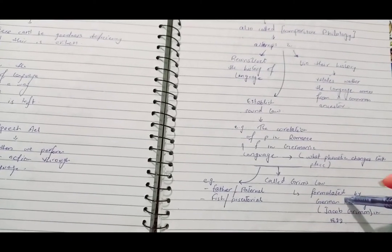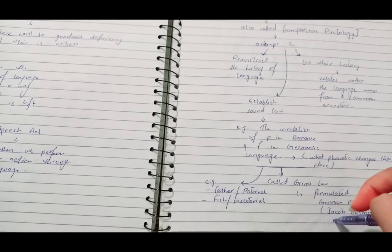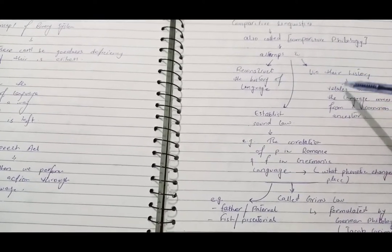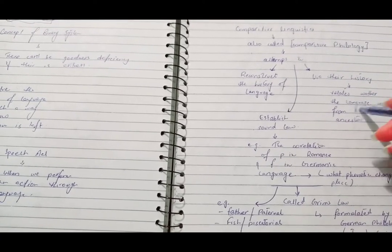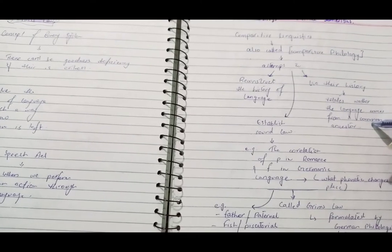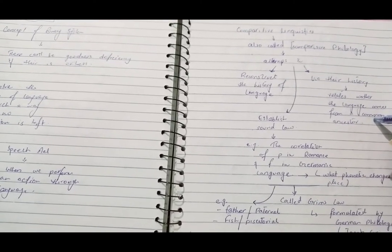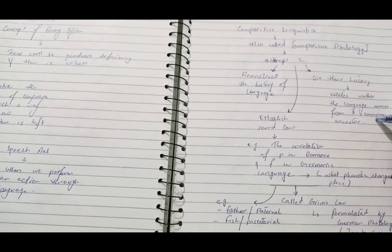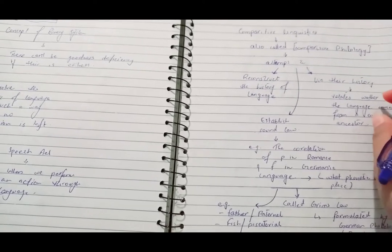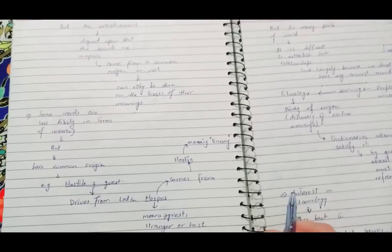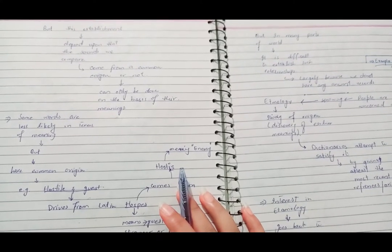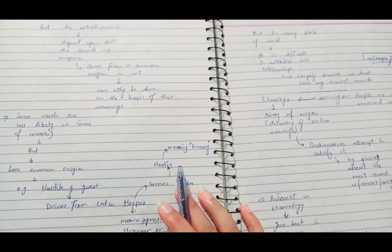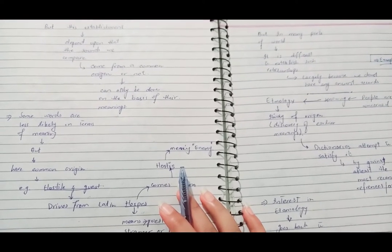The correlation of the sounds, the P sound in Romance and F sound in Germanic language, is also established by comparative linguistics. It was formulated by the German philologist Jacob Grimm in 1822. The third point is that comparative linguistics, by the use of history, relates whether the language comes from the common ancestor or not.